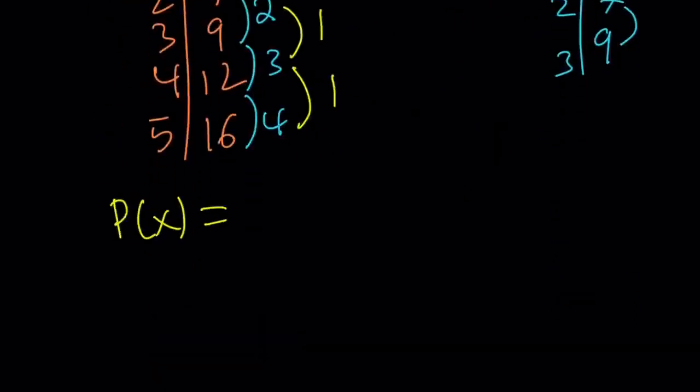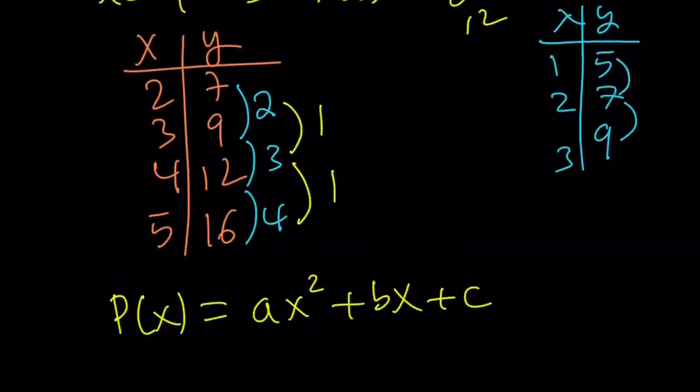Awesome. What is that supposed to mean, then? Well, it means you can write P of x as ax squared plus bx plus c. But we have all these data points. So, we can use three of them to come up with a system of equations. Let's do it real quick.